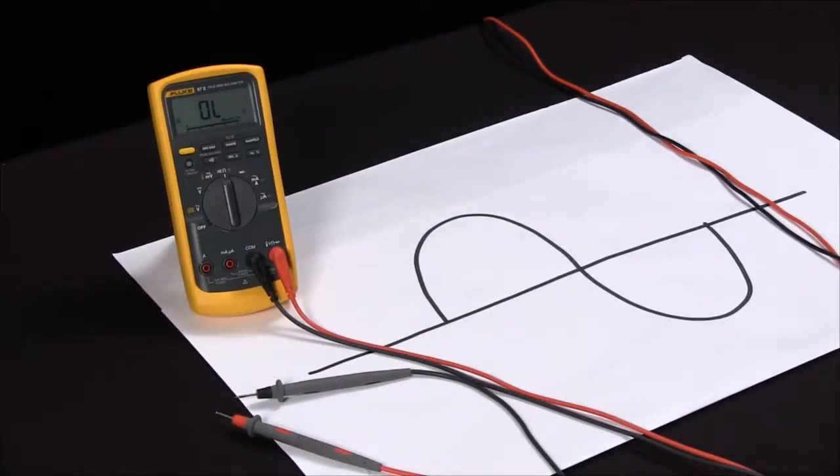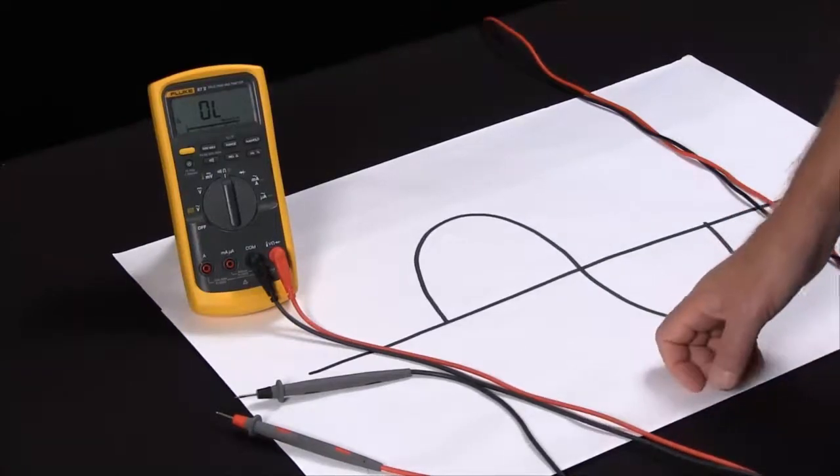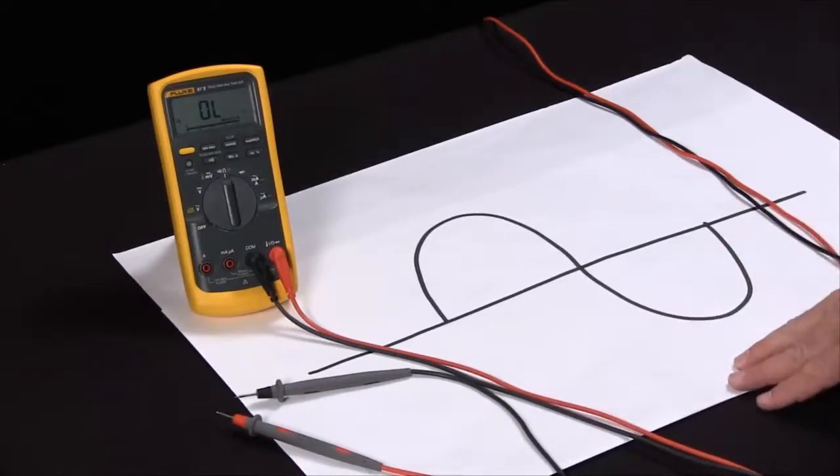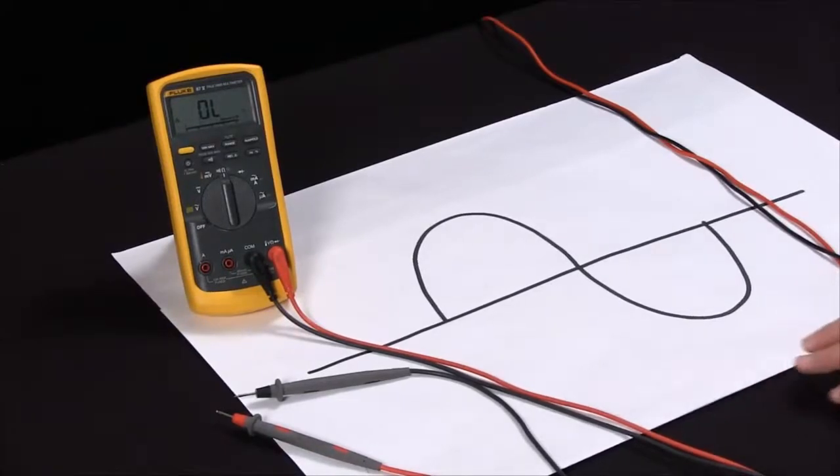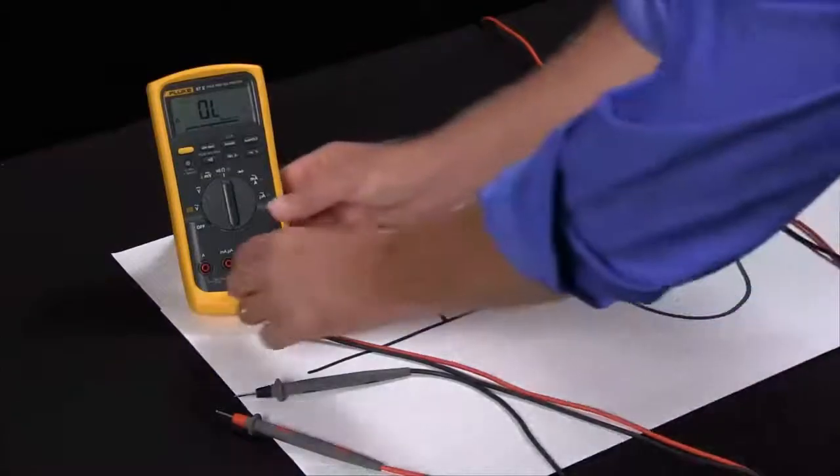I can go to the source, hit the relative mode, it goes to zero. If I then go out to the load and I read minus 10 volts then I know I have a 10 volt voltage drop between the source and the load. So that can be a very handy function.